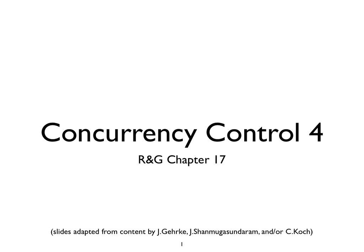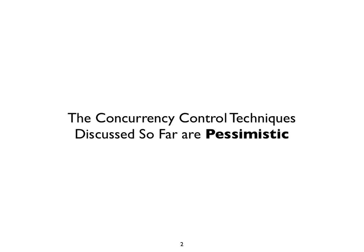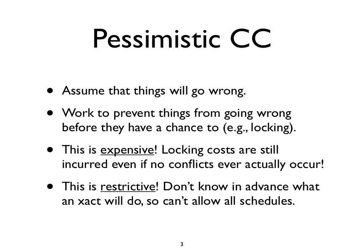Today, to wrap up the concurrency control segment and finish chapter 17, we're going to talk about a couple of more advanced techniques that give you quite a bit more flexibility, at the cost of potentially doing wasted computations. The concurrency control techniques we've discussed so far are what's known as pessimistic — the glass is half empty. The idea is that you assume anything that can go wrong will go wrong, and you modify your system to exclude any possibility of anything going wrong, including locking, which prevents any schedule that could potentially lead to something non-serializable.